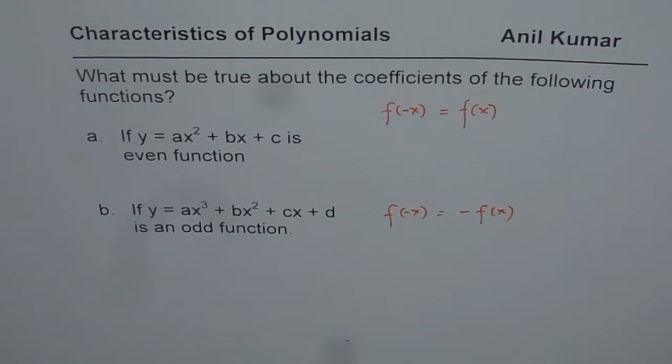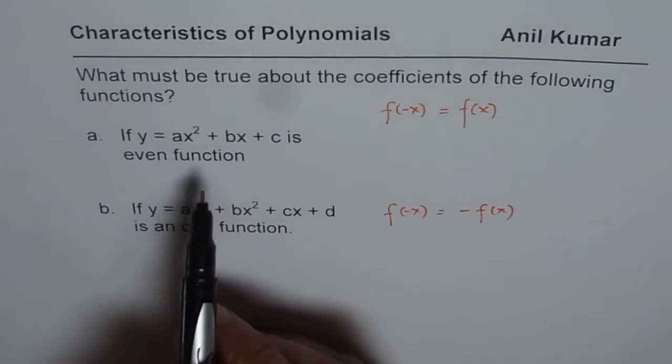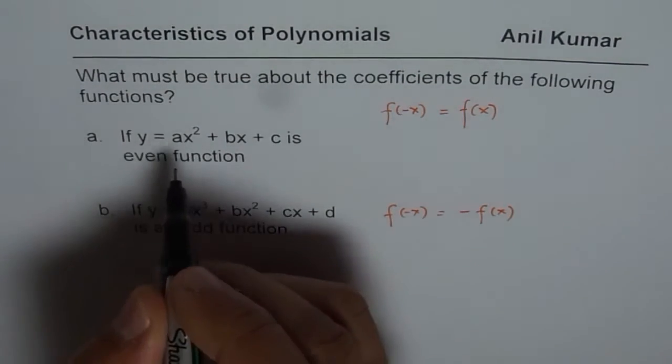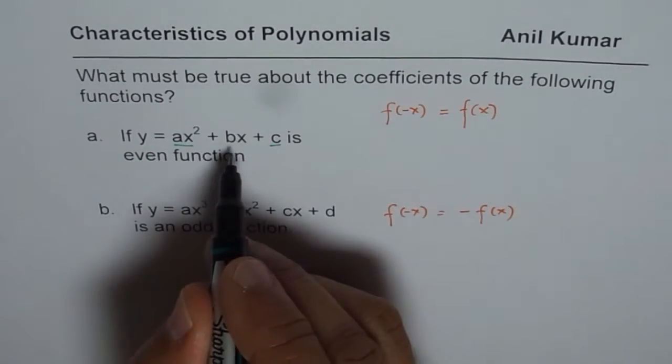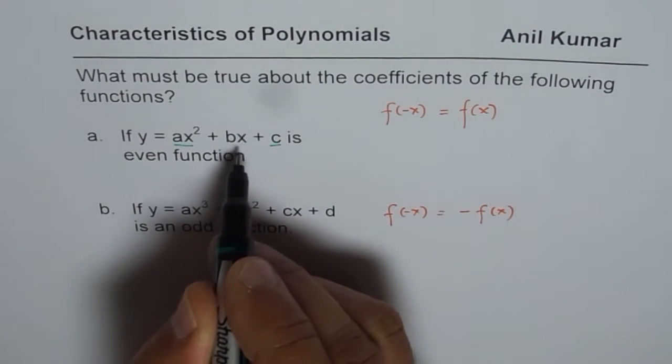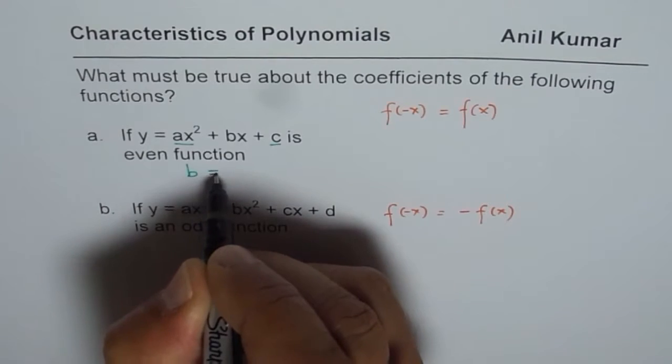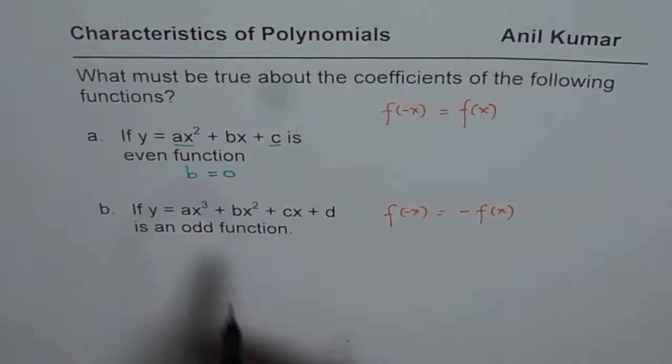Here is the solution. If this function has to be even, then what we notice here is we have two even terms: ax² is even, c is even. So that part is okay. In this case, what should happen is that b should equal zero. Only then this function is going to be even.